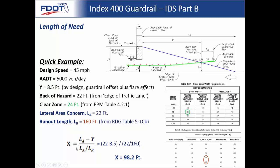With the three variables defined, you plug and chug: X = (LA − Y) / LA × LR, giving a length of need of 98.2 feet. This would be where your redirective portion of guardrail has to start — also known as the start length of need. For a simple shielding of a hazard, we also require that the guardrail extends a minimum of six feet three inches beyond the back of the hazard.